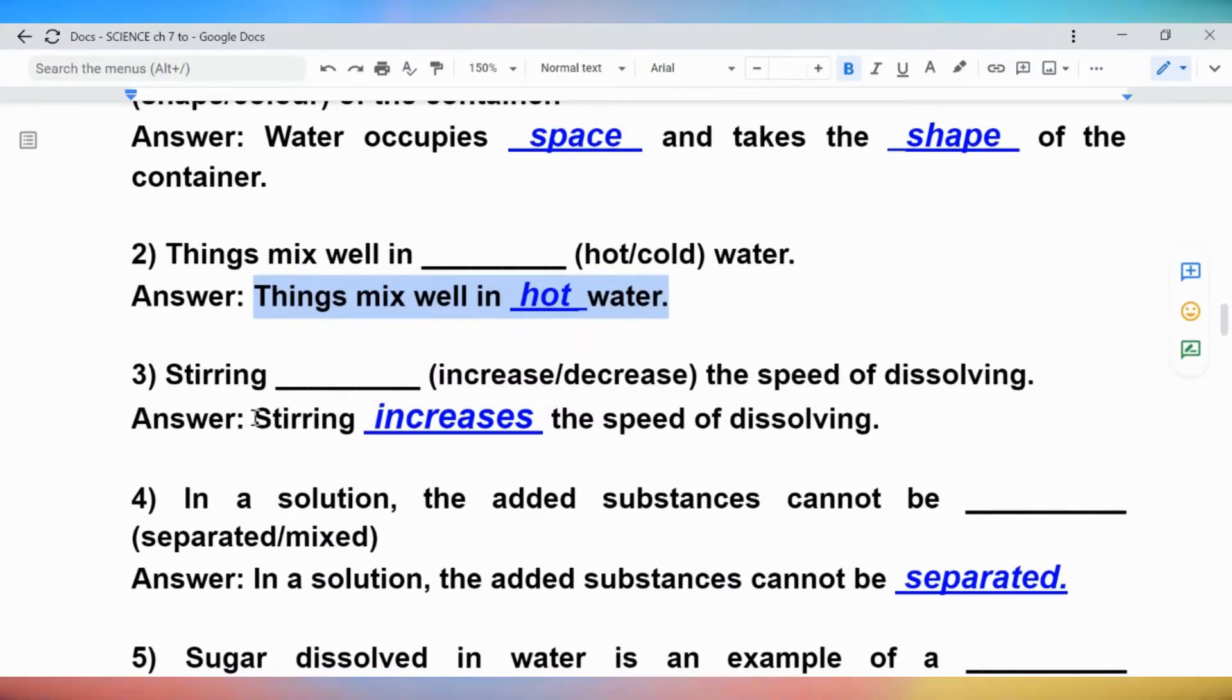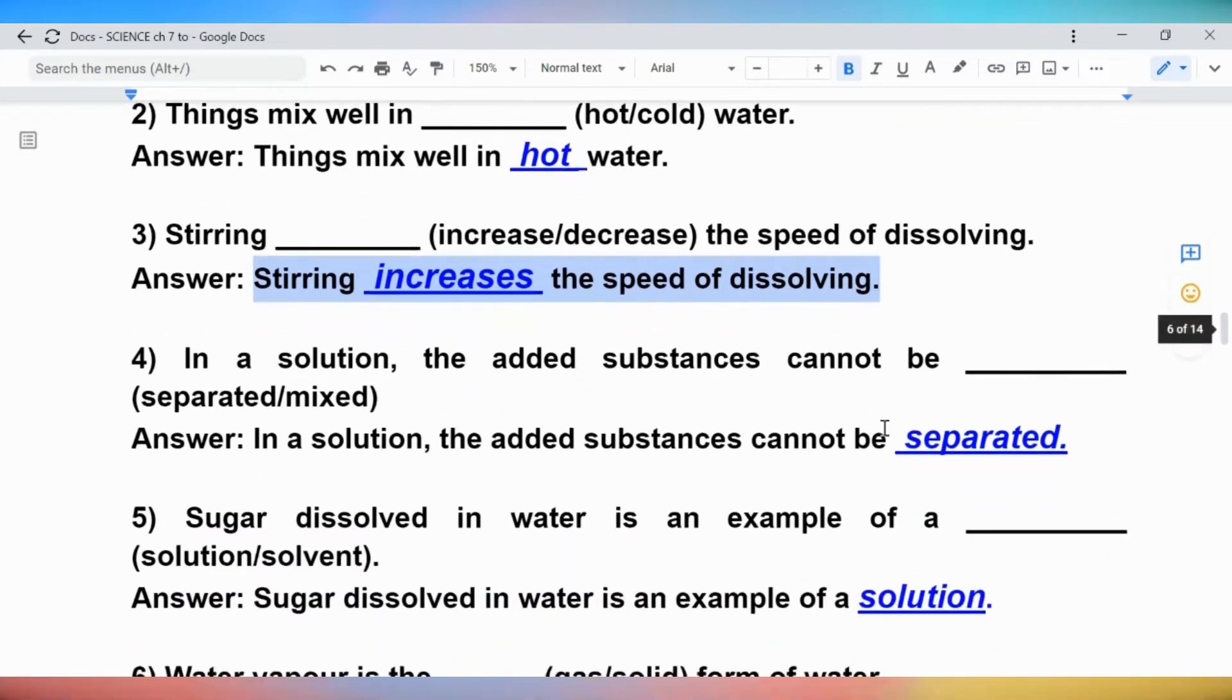Question 3: Stirring blank (increase/decrease) the speed of dissolving. Answer: Stirring increases the speed of dissolving.